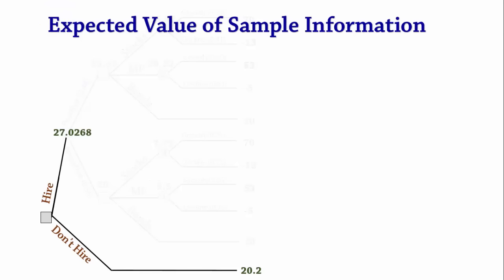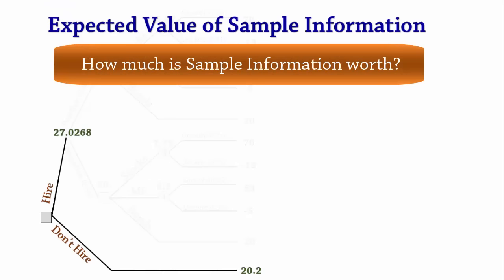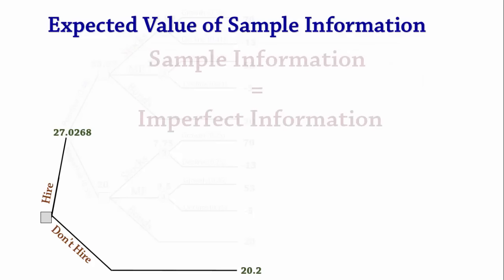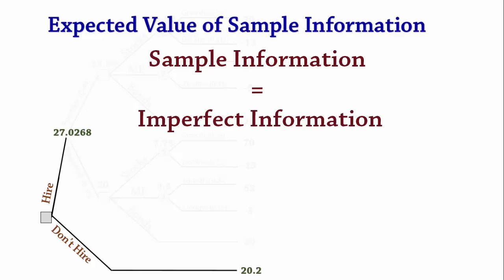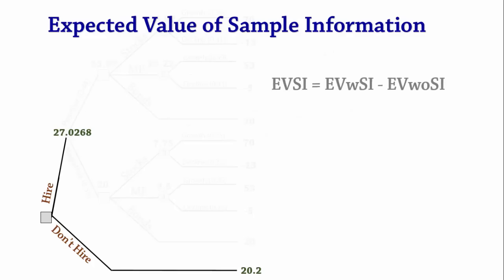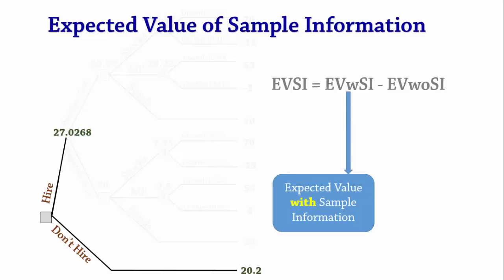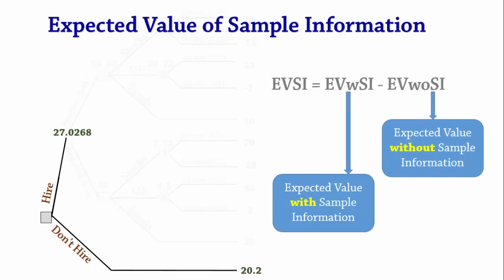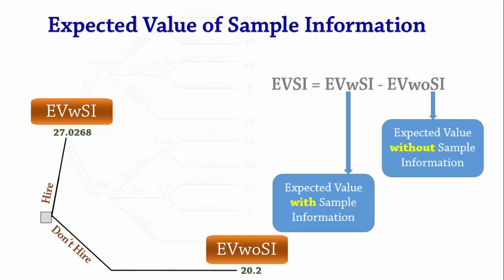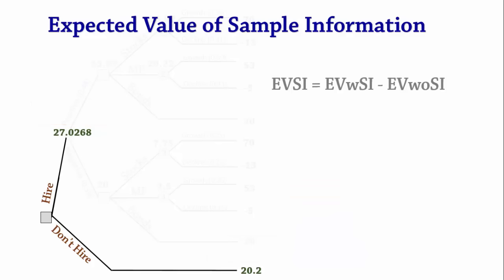The expected value of sample information estimates the value of information supplied by the consultant. Sample information is also known as imperfect information. The expected value of sample information, EVSI, is calculated as EV with SI minus EV without SI. EV with SI is the expected payoff if the consultant is hired without paying the consultant. EV without SI is the best expected payoff if the consultant is not hired. In this case, EV with SI is 27.0268 and EV without SI is 20.2, therefore EVSI is 6.8268.